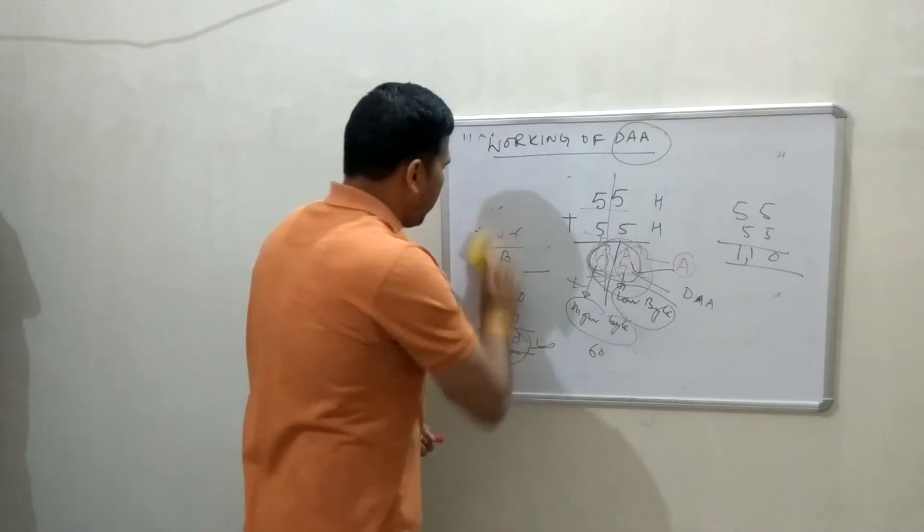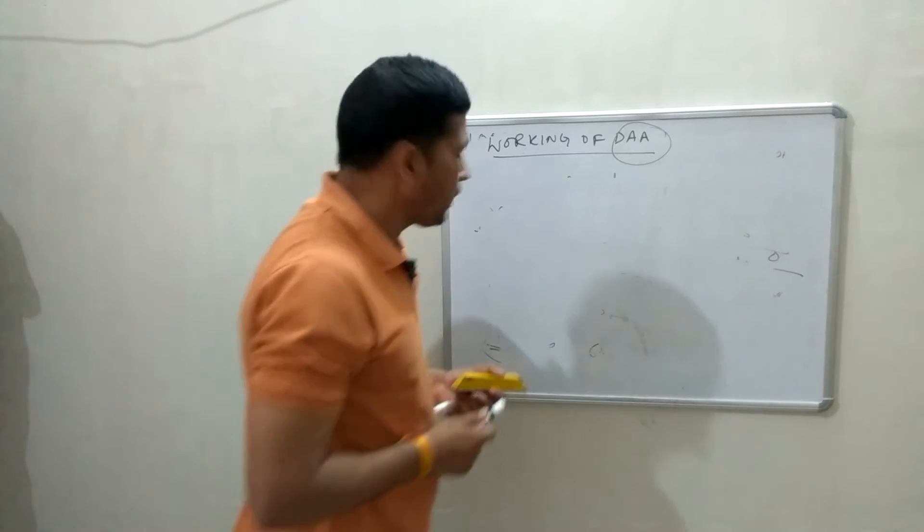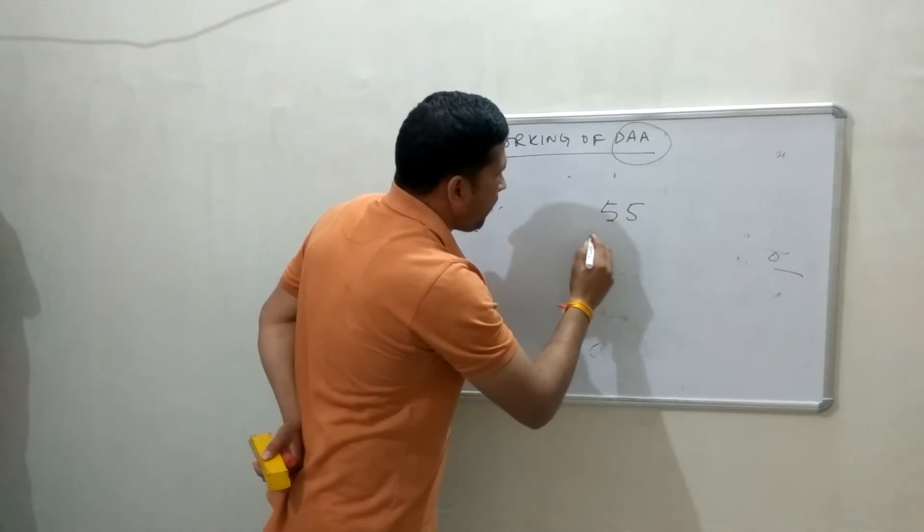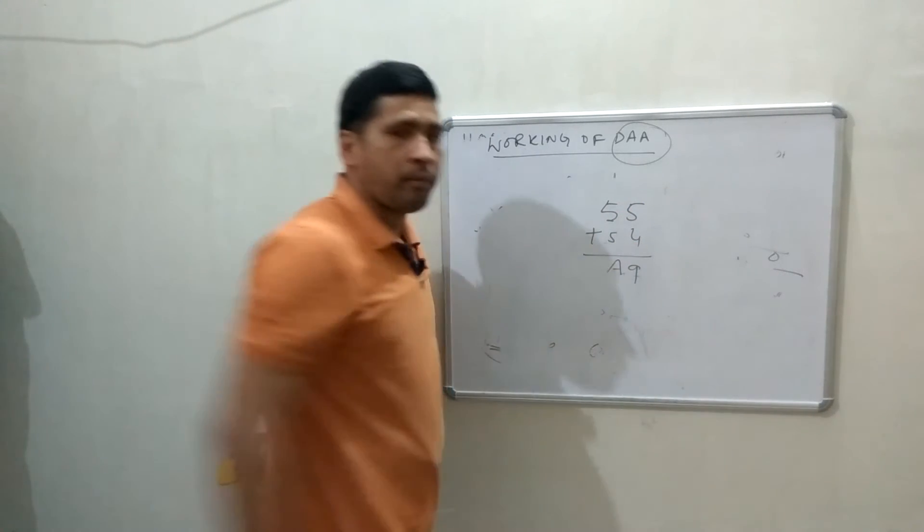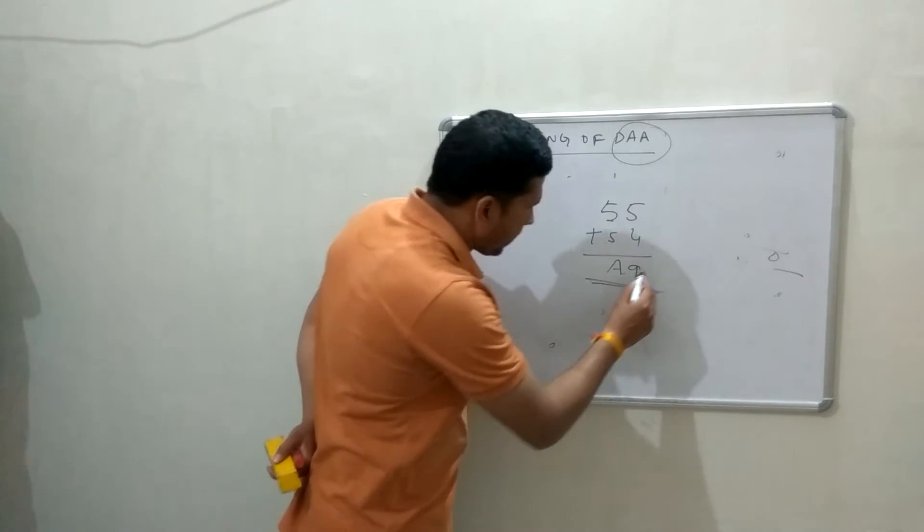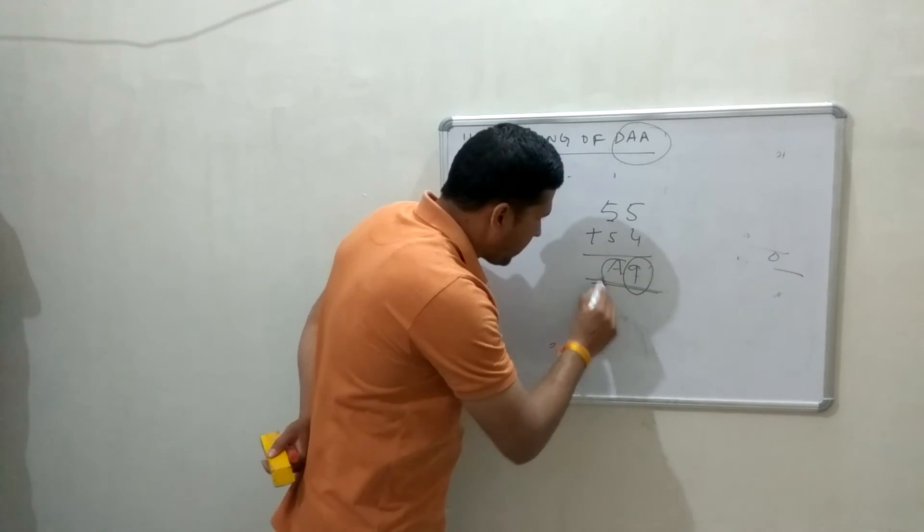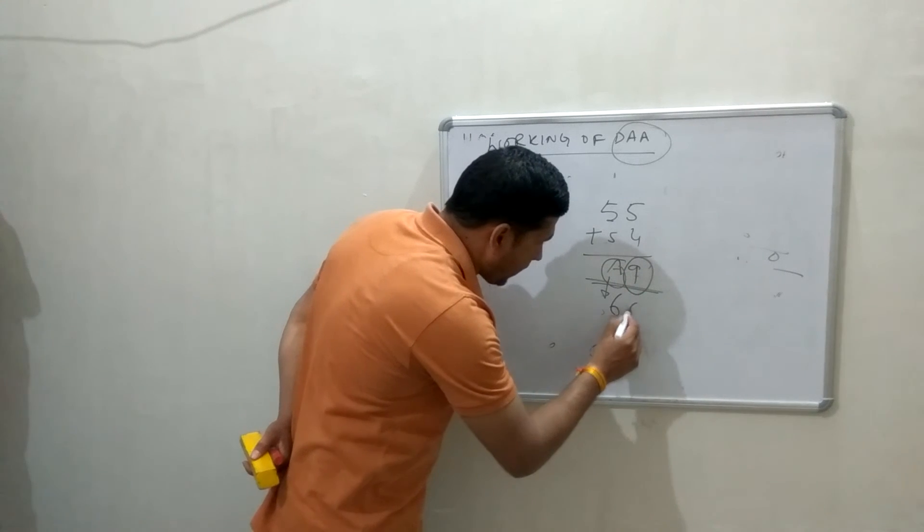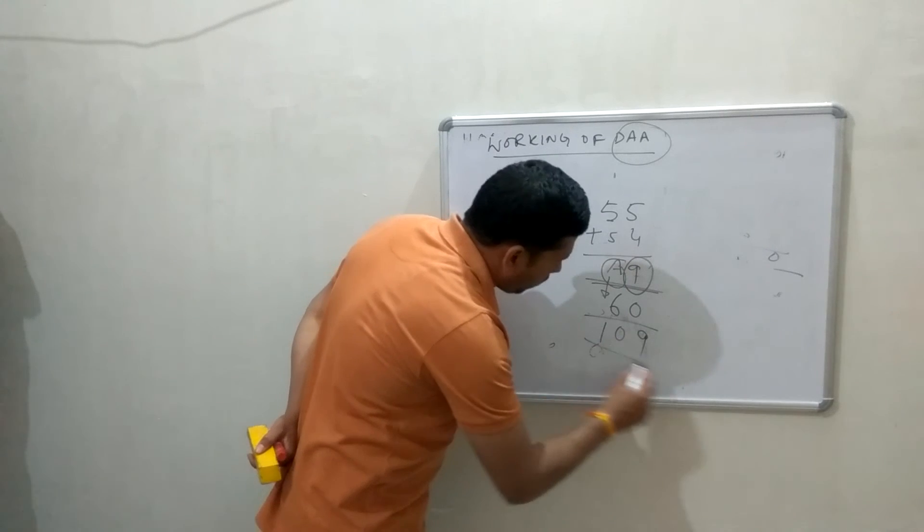Take second example. 55, 54, 9, 8. In this instruction, you can see that, lower byte is not greater than 9, higher byte is greater than 9. So, we will add 60. That will be 9, that means it will be 10.